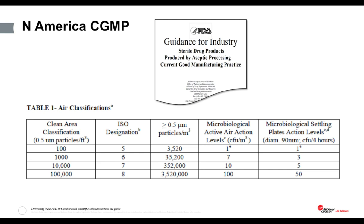Let's take a look at the North American CGMP document. This differs from the European and World Health guidance in that it only mentions one particle size — the 0.5 micron particle. However, any manufacturer based in North America wanting to sell their products outside of North America must count both 0.5 and 5 microns, as they must be in compliance with the standards of the country to which they export their products.